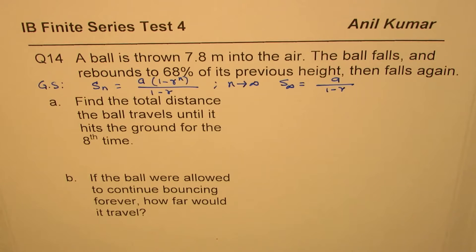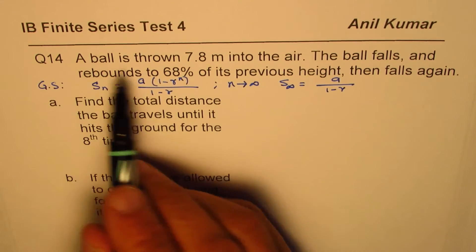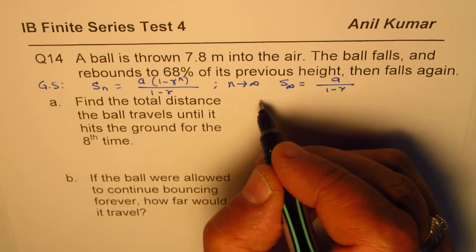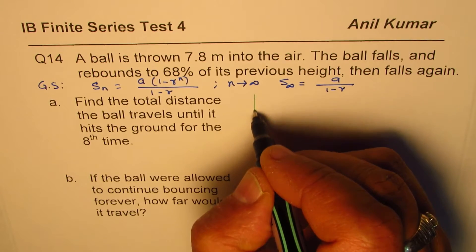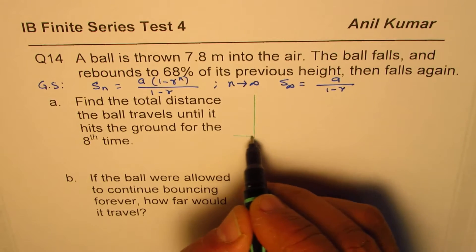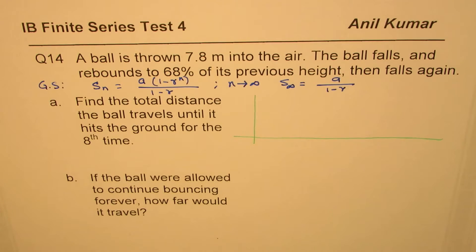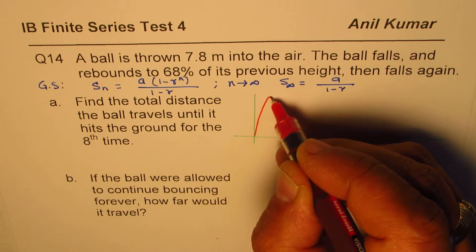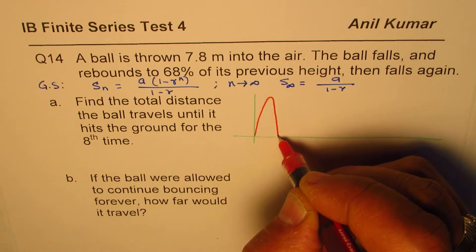You can pause the video, answer the question, and then look at my suggestions. Let's first understand the question itself. A ball is thrown some meters into the air, so let's assume the ball is thrown from the ground. We'll sketch the scenario — the ball goes up and comes down.